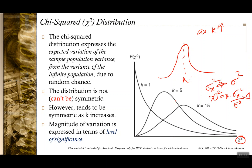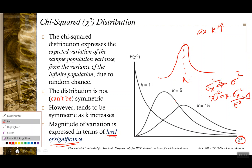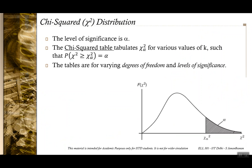The magnitude of this variation is expressed in terms of a parameter called the level of significance. The level of significance is alpha, meaning that chi-alpha-square is the value of chi-square such that the area under the curve beyond chi-alpha-square equals alpha. You have a chi-square table with elements tabulated in terms of degrees of freedom and levels of significance.